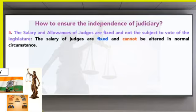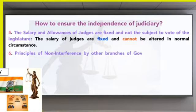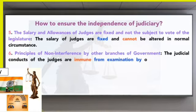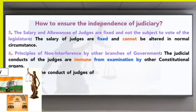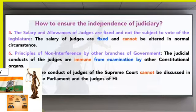The salary and allowances of the judge are fixed and not subject to a vote of the legislature. The salary of the judge is fixed and cannot be altered in normal circumstances. If any circumstances occur, the salary may not be reduced, because their salary is fixed according to the Constitution. If the legislature passes a bill that becomes law, what is mentioned must be fulfilled, but they should not decrease the salaries.